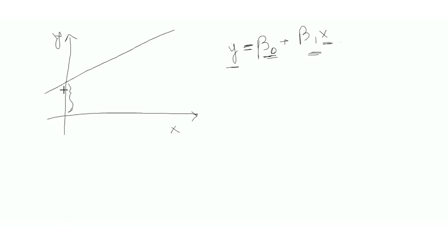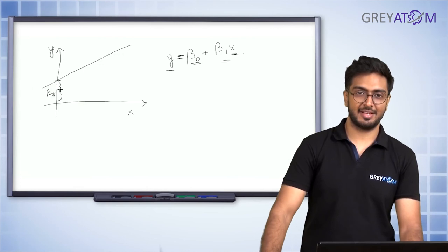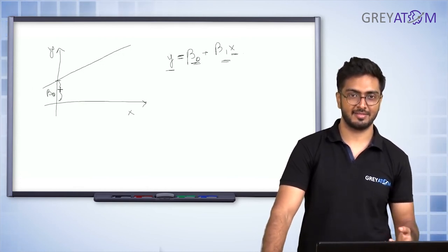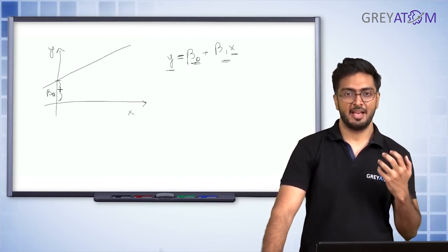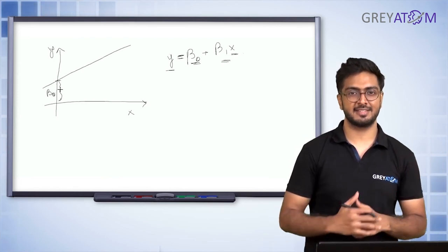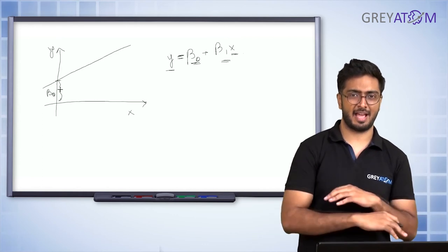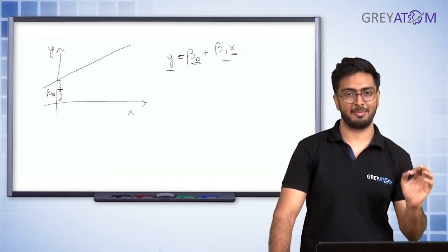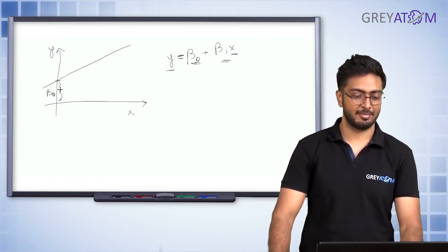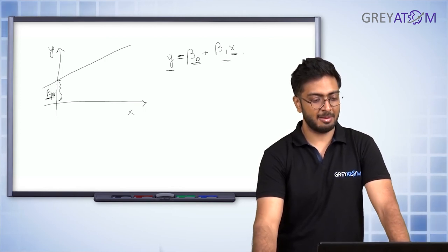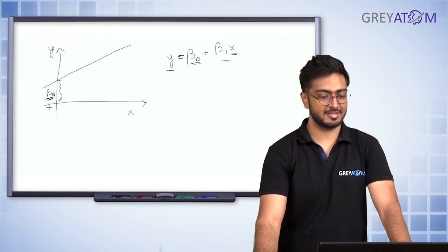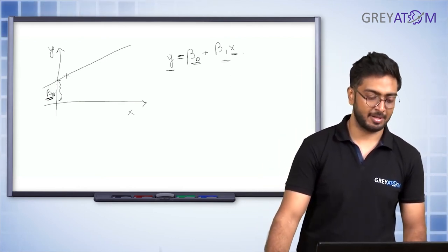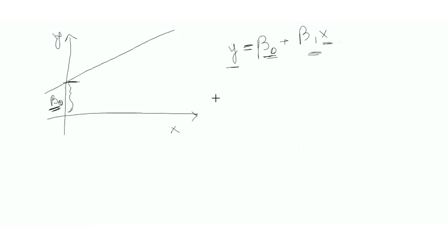When x equals zero, the value of y is beta-naught. So in this example, beta-naught is the price of a house even when there is no area — physically that doesn't make much sense, but intuitively you can understand it as the basic cost of a house: if you have a land plot, what is the basic price of that land? That's essentially what beta-naught represents — it's called the intercept.